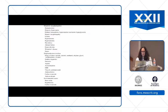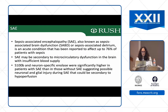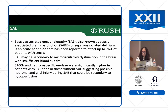Talking a little bit about diffuse neuronal dysfunction — here are all the etiologies for reasons why a patient can have coma in this setting. I'll take a minute to talk about sepsis because that's something you all commonly see. Sepsis-associated encephalopathy or sepsis-associated dysfunction and delirium is an acute condition and has been reported in up to 76% of patients with sepsis. It could be secondary to microcirculatory dysfunction in the brain when there's insufficient blood supply.